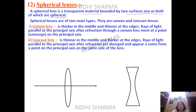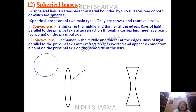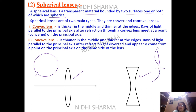What do we mean by this? If you have a sphere and you cut parts of it, you can have a combination of two spherical sides. Or you can have one spherical side and another plane side — that will become a plano-convex lens.